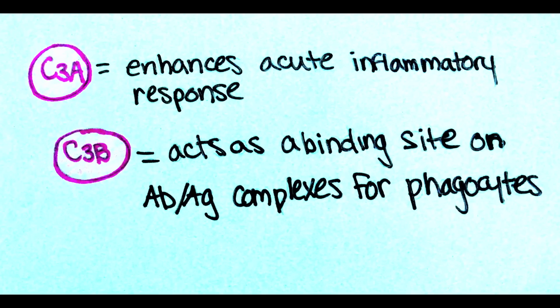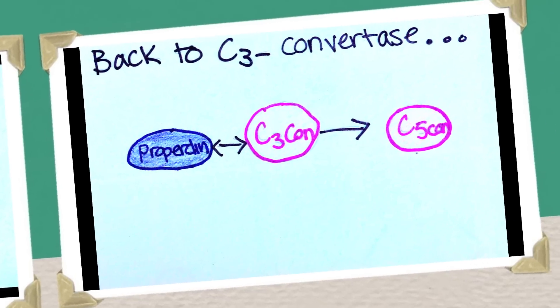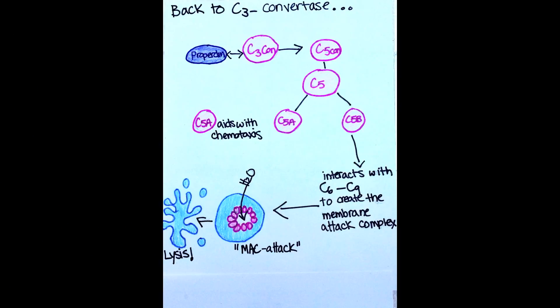C3A moves on to enhance the acute inflammatory response. C3B attaches themselves to the antigen-antibody complex in a process called opsonization. C3B acts as a binding site for phagocytes on the antigen-antibody complex. At the same time, a globulin protein called properidin interacts with C3 convertase to create C5 convertase.